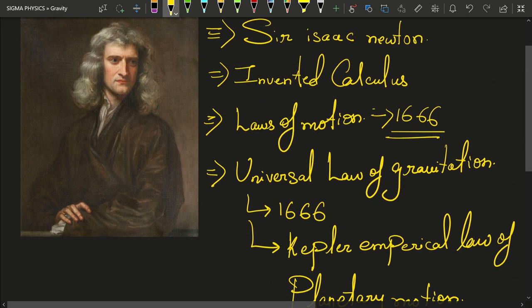He was just 26 years old and he discovered all this in a single year. That's why Newton is the greatest physicist of all time.